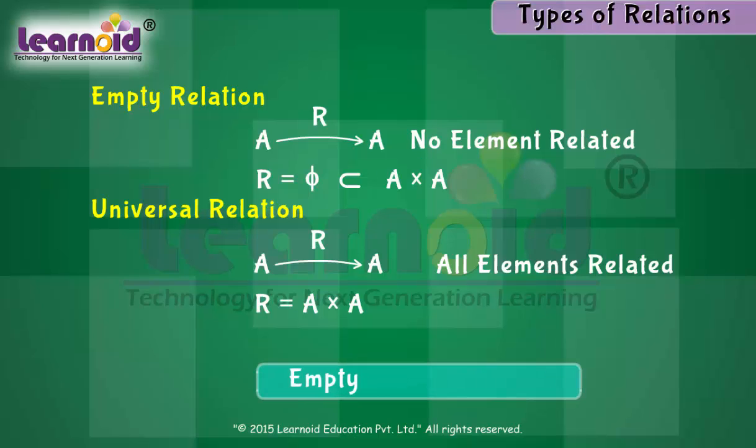Both the empty relation and the universal relation are called trivial relations.